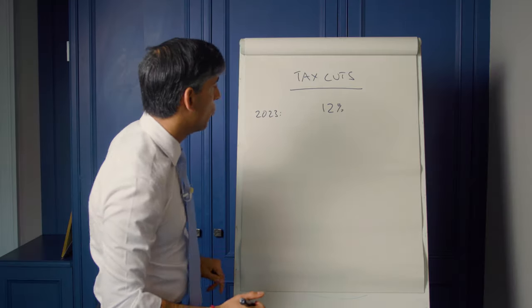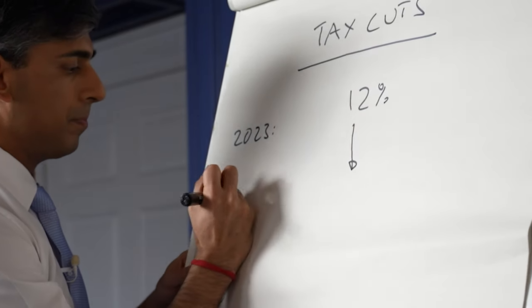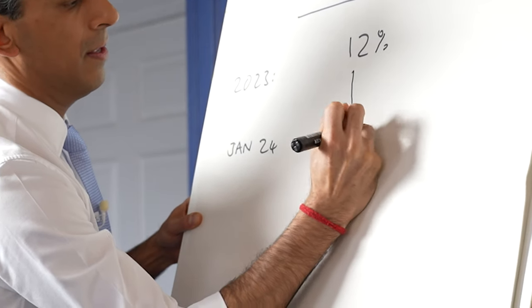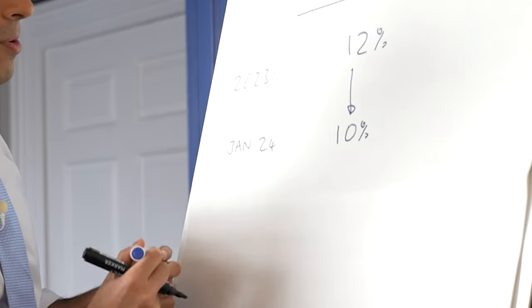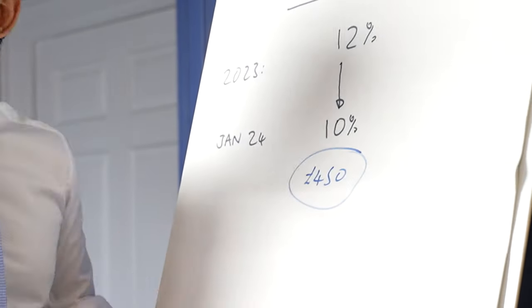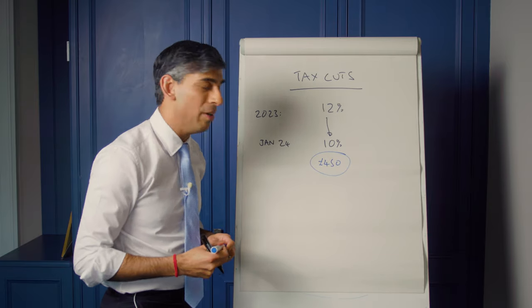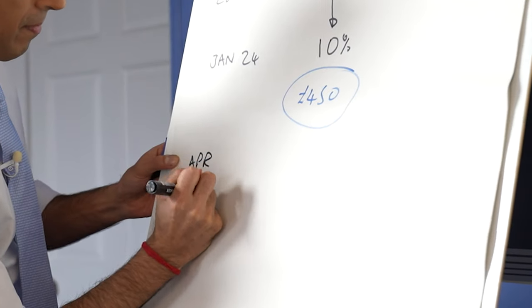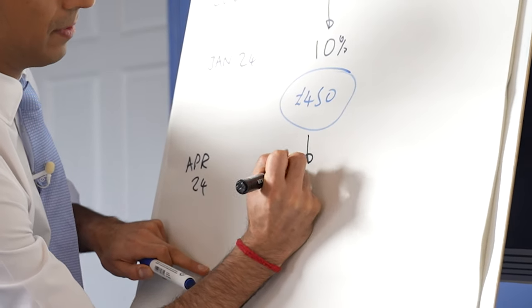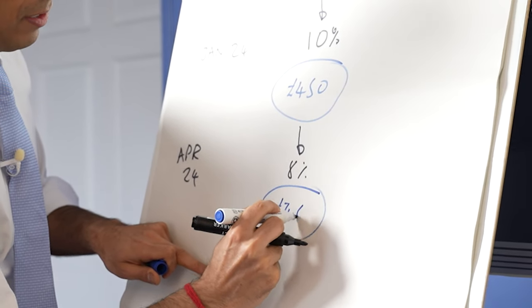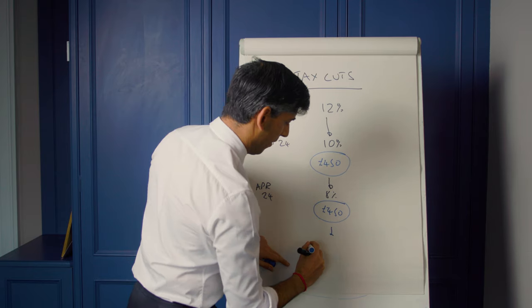Last year the rate of national insurance was 12%. In January that was cut to 10%, and that meant a £450 tax cut for a typical person in work. The recent budget cut it again to 8%, meaning another £450 tax cut.